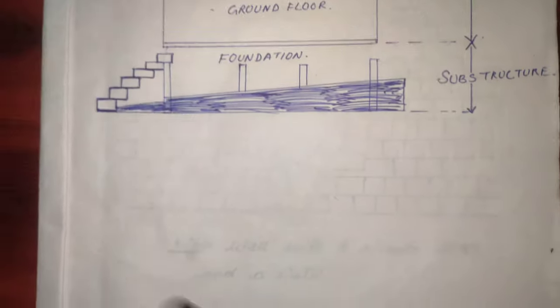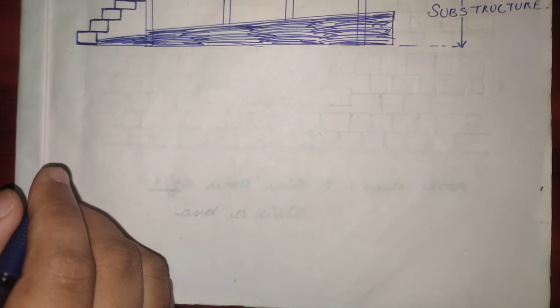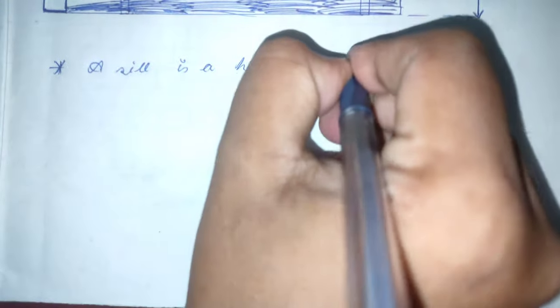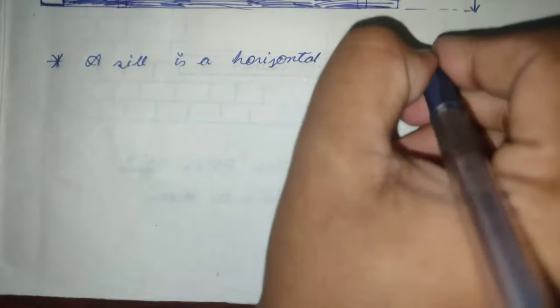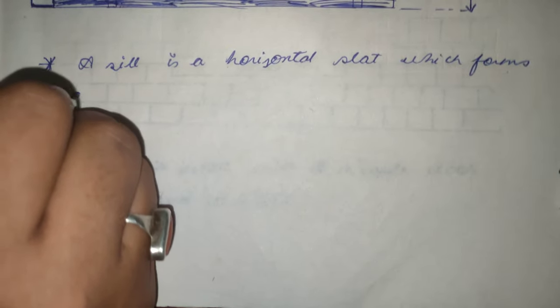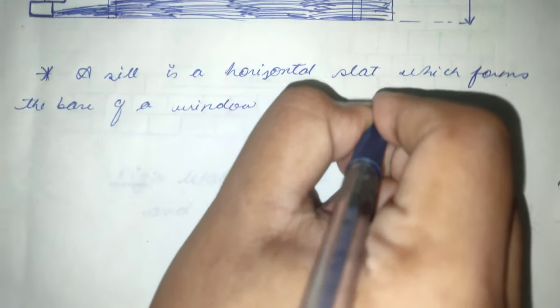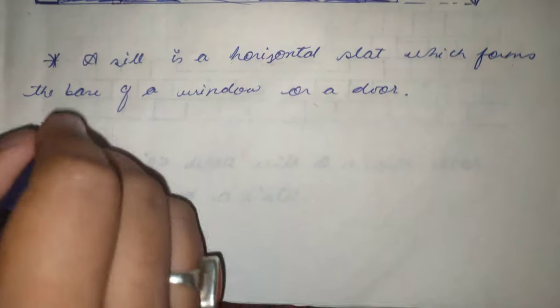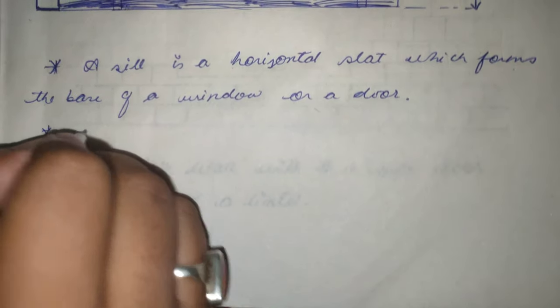So moving on, let's talk about sills now. A sill is a horizontal slate which forms the base of a window or a door. Sills and lintels are both horizontal members.